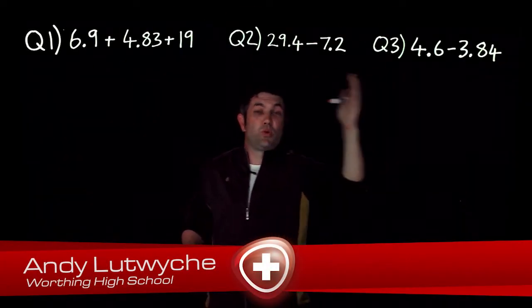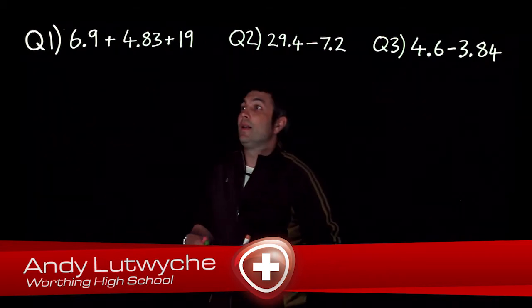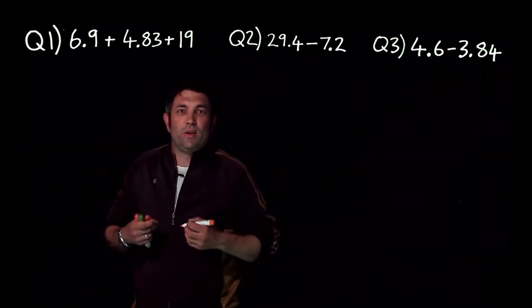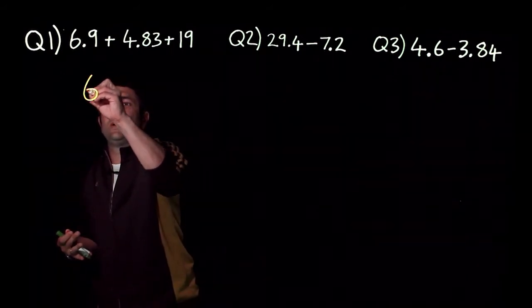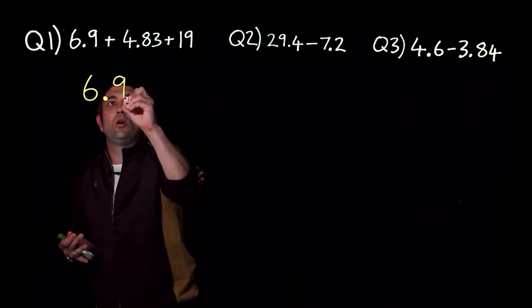Right, we're asked to add or subtract these decimal numbers here. Now in order for the numbers to be in the right place value, the best way to do this is to make sure that the decimal points are all in a column.